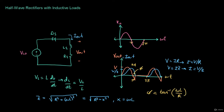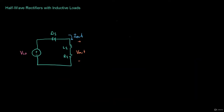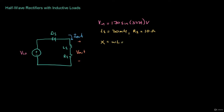Now let's take a look at our numerical example. Just like in the previous example, we're going to say that V_in equals 170·sin(377t) volts. Let's say that L1 equals 20 millihenry and R1 equals 10 ohms — the same R1 as in the previous example. First, let's calculate the reactance of the inductor: omega·L equals 377 times 20 millihenry, which equals 7.54 ohms.